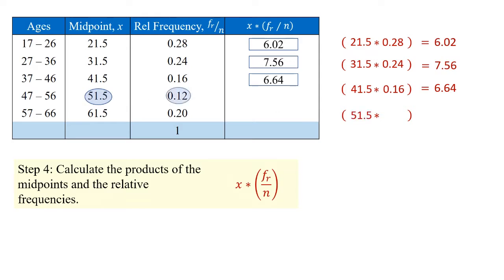Midpoint value of 51.5 times 0.12 gives us a total of 6.18. And finally, the fifth category or fourth group, people aged 57 to 66, midpoint 61.5 times 0.2 gives us a total of 12.3.